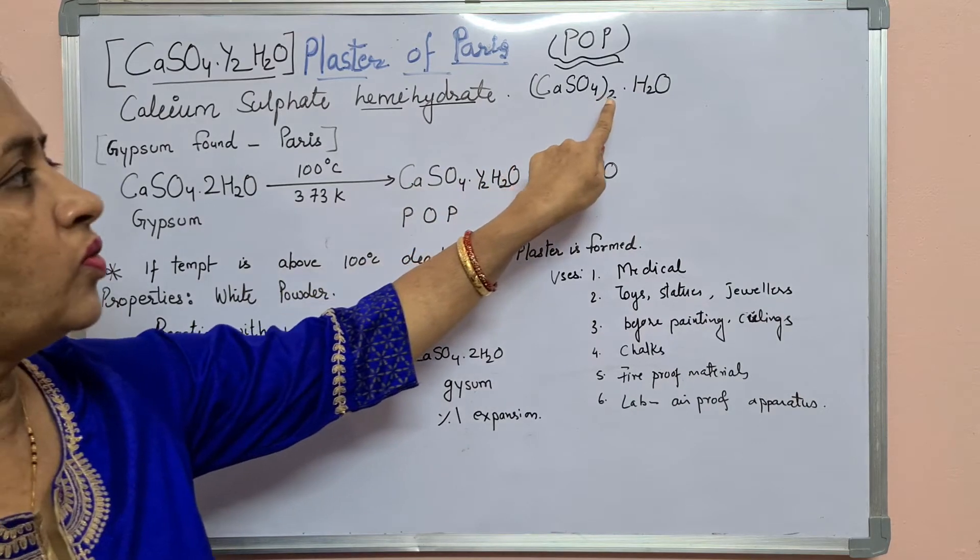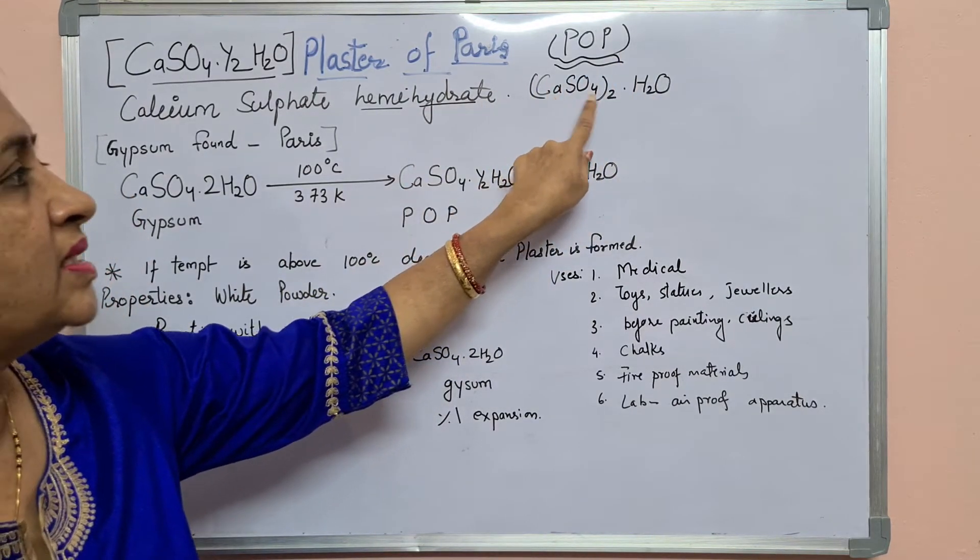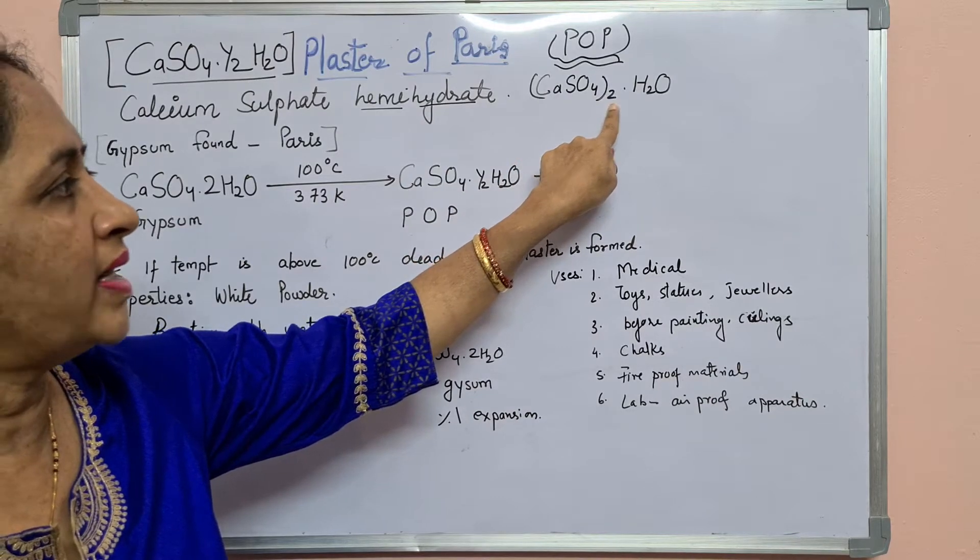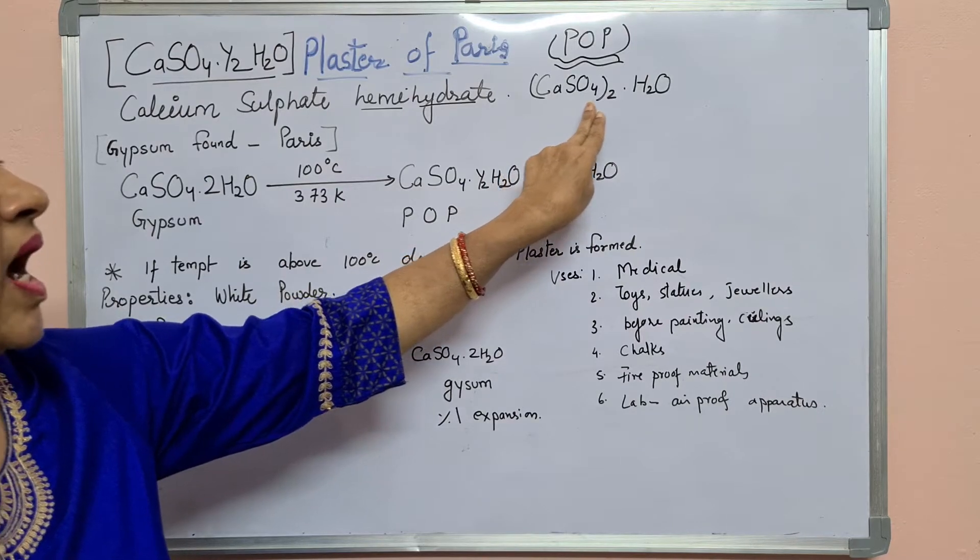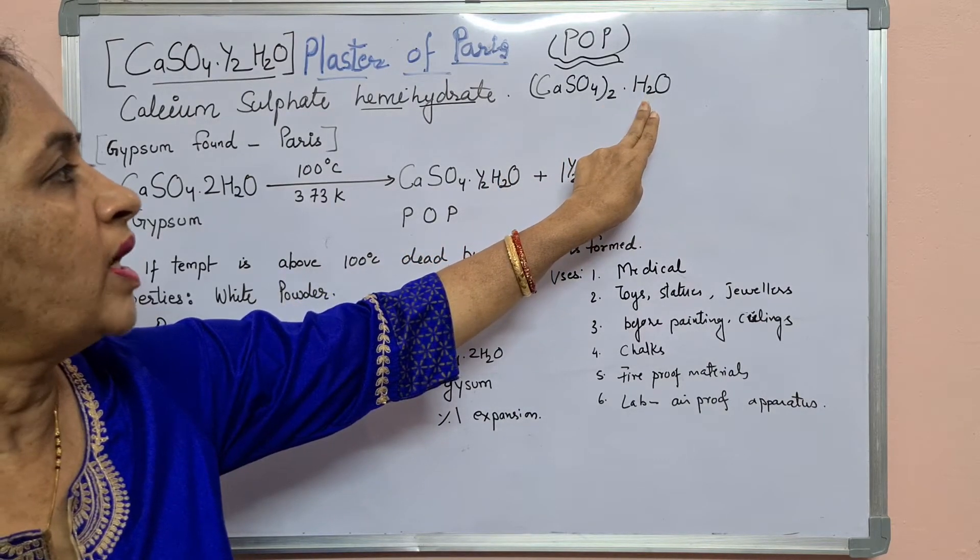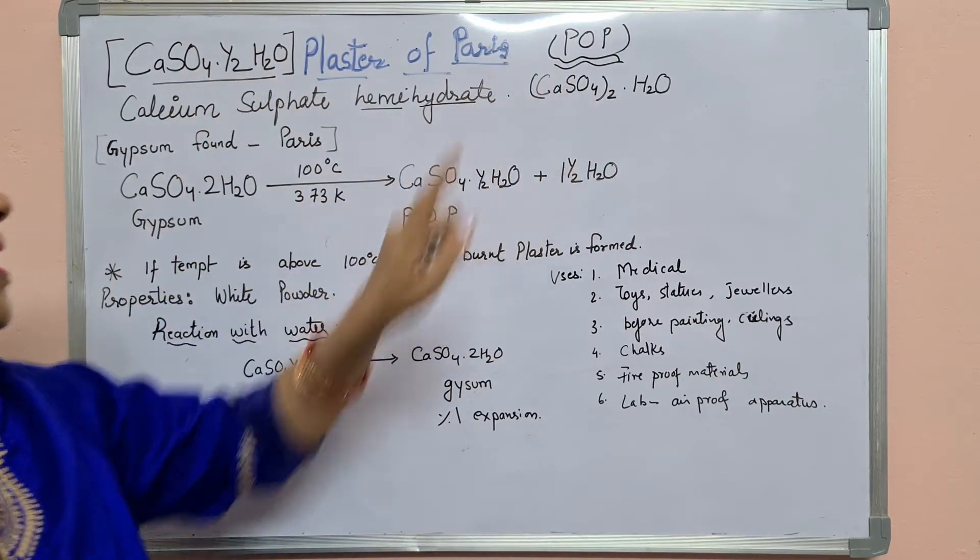CaSO4·½H2O can also be written as (CaSO4)2·H2O. It means that two molecules of calcium sulfate are sharing one water molecule. Both formulas are correct.